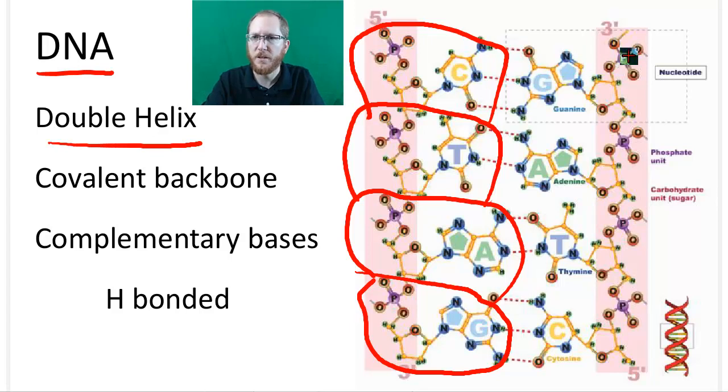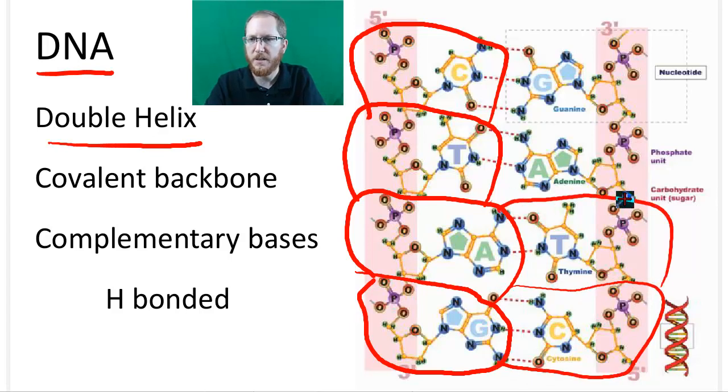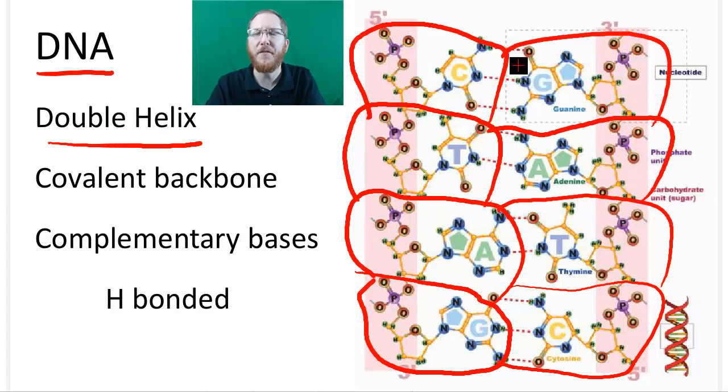The other strand also has a phosphate, sugar, phosphate, sugar, phosphate, sugar. You can see it's four nucleotides, same basic thing. But you'll notice there are these dotted lines in the middle where the nitrogen bases meet. Those dotted lines connect them. It's those dotted lines that represent the hydrogen bonds.